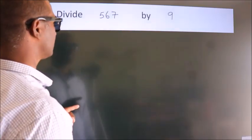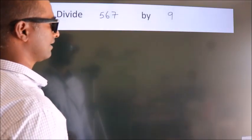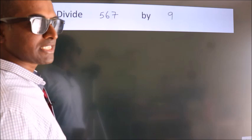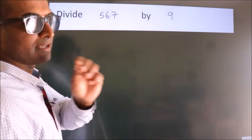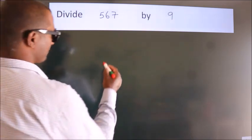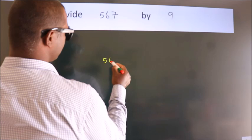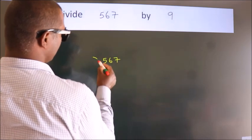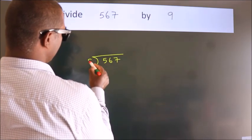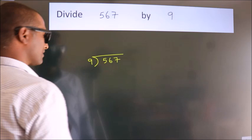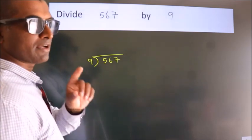Divide 567 by 9. To do this division, we should frame it in this way: 567 here, 9 here. This is your step 1.